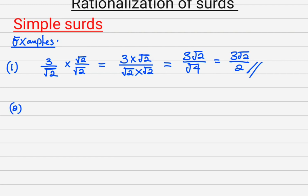Number 2: I can have 1 over root 2. The same thing — multiply by root 2 over root 2 — and I'm going to have root 2 all over 2. That is the answer.